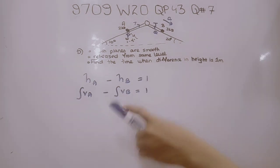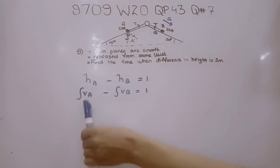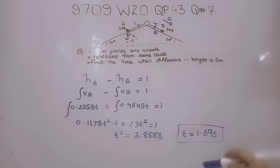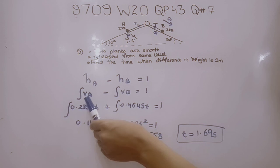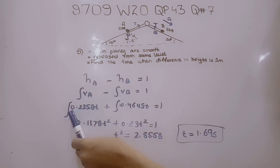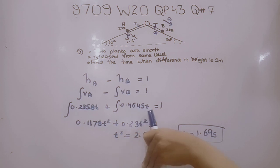We can reach the height by simple integration. Using HA minus HB equals 1, we integrate: integral of VA minus integral of VB equals 1. This gives us 0.2358T minus negative 0.4645T equals 1. With simple integration T squared by 2, this becomes 0.1178 plus 0.2323 times T squared equals 1.